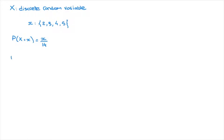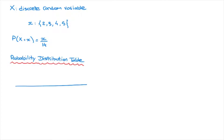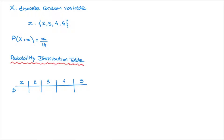Let's start by learning how to construct a probability distribution table. The table consists of two rows. On the top row we show all the values that the discrete random variable can take — in this case 2, 3, 4, and 5 — denoted by lowercase x. In the second row we write all of the corresponding probabilities: P(X = x).